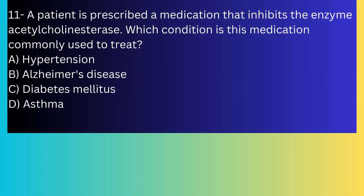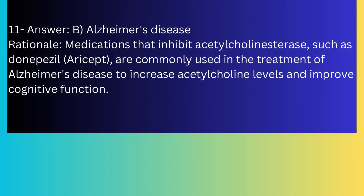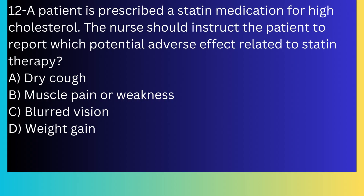Question number eleven: A patient is prescribed a medication that inhibits the enzyme acetylcholinesterase. Which condition is this medication commonly used to treat? A) Hypertension, B) Alzheimer's disease, C) Diabetes mellitus, D) Asthma. The answer is B, Alzheimer's disease. Medications that inhibit acetylcholinesterase, such as donepezil, are commonly used in the treatment of Alzheimer's disease to increase acetylcholine levels and improve cognitive function.